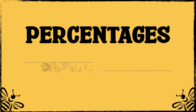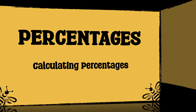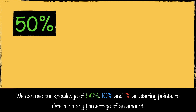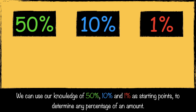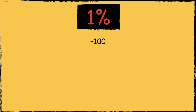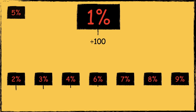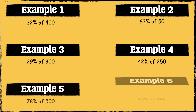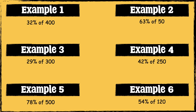In this video we're going to look at calculating percentages. To find out any percentage of an amount we can use our knowledge of 50%, 10% and 1% as starting points. In this video we'll focus on using 10% and 1% as a starting point. If I know how to work out 1% of a number, then I can easily work out any percentage of a number. I'm going to go through six different examples — pause the video if you'd like to try them yourself, and press play when you're ready.